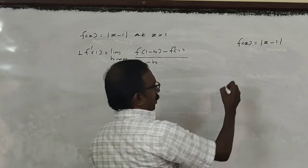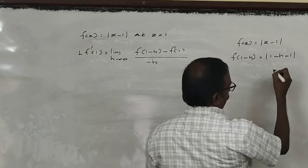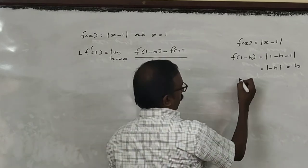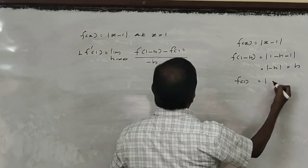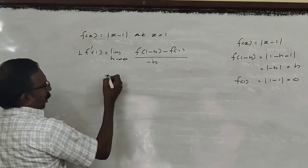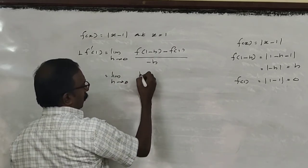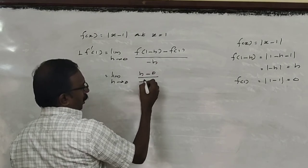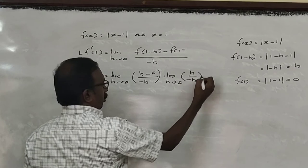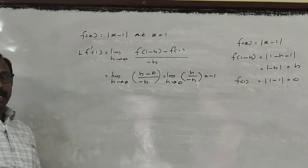Now, L of f'(x) at x=1: the formula gives us the limit as h tends to 0 of f(1 minus h) minus f(1), divided by minus h. Here f(x) = |x - 1|, so f(1 minus h) = |1 minus h minus 1| = | minus h| = h. And f(1) = |1 - 1| = modulus of 0 = 0. So the limit as h tends to 0 of h minus 0, divided by minus h. That is h by minus h, which is minus 1. The limit of minus 1 is minus 1. The limit of a constant is the constant itself.